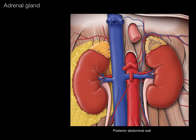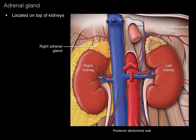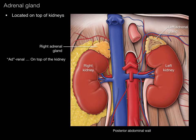The adrenal gland is located on top of the kidney. So there's the right kidney and the left kidney, and on top there's the right adrenal gland and the left adrenal gland. Adrenal means on top of or beside the kidney, which is why it's called that. It's also referred to as the suprarenal gland.